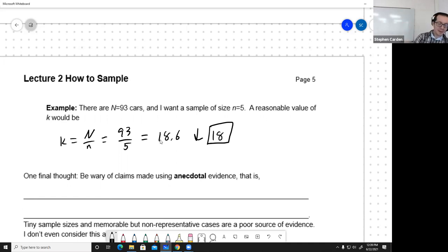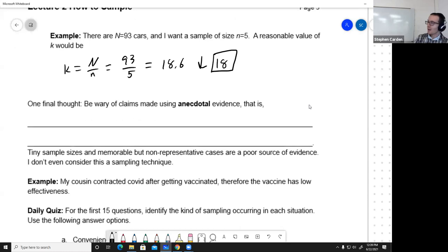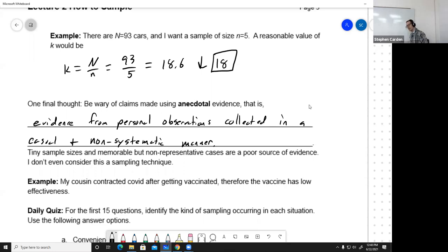And the final thought. We've seen six different sampling methods. Which ones are good? Which ones are bad? Pros and cons of each. But somewhere in this we need to fit anecdotal evidence, which is evidence from personal observations collected in a casual and non-systematic manner. You're going to remember the things that were more memorable, usually the things that are more unusual and maybe seem to buck the trend or not follow a pattern. But even though those things you remember, they're not necessarily representative of what's going on on average.